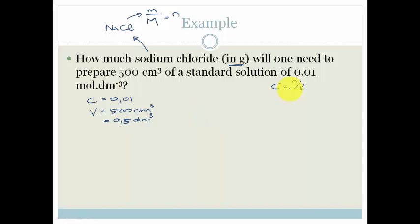Right, so now let's rearrange this formula. We've got concentration is number of moles over volume. Therefore the number of moles is just going to be concentration times volume, which is going to be 0.01 times by the volume of 0.5. And if you're a little bit nervous to do this by yourself you can just get onto your calculator.